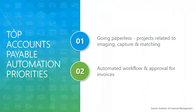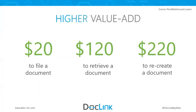Top priorities for automation: the first is going paperless — any projects related to imaging, capturing, and matching, which is what DocLink can do. The second is automated workflow and approval, another area where DocLink can really shine. This is also pulled from PricewaterhouseCoopers — these are always great slides showing where we need that higher value add.